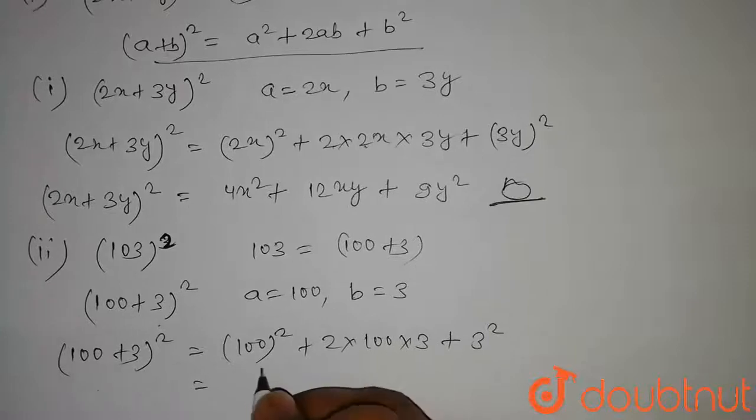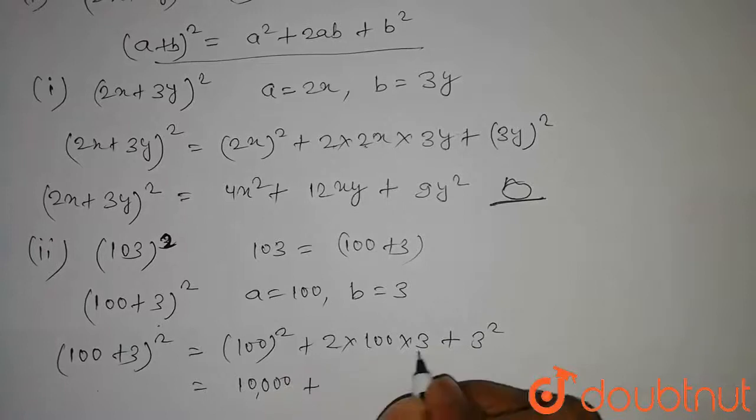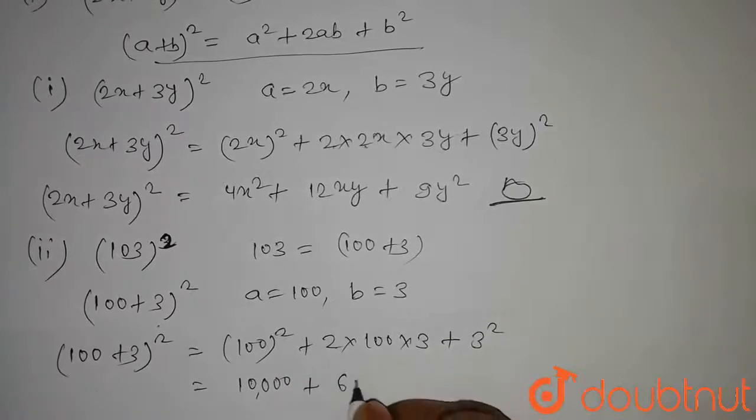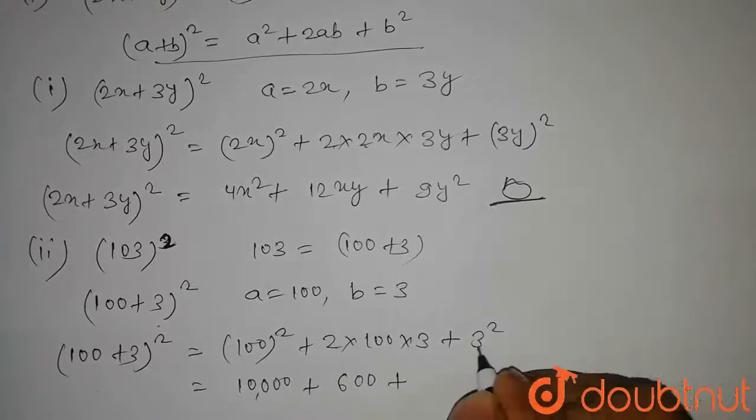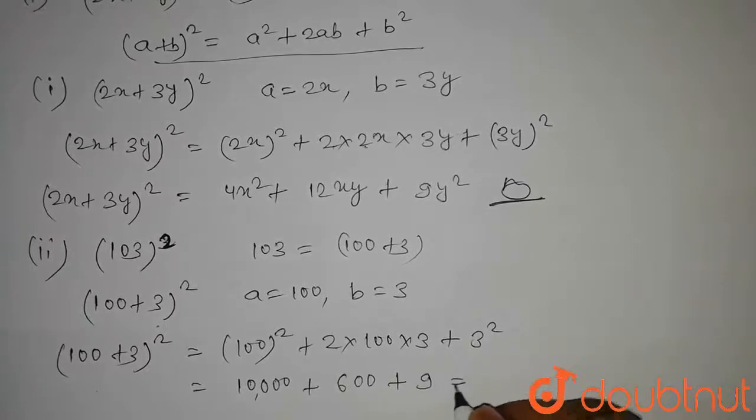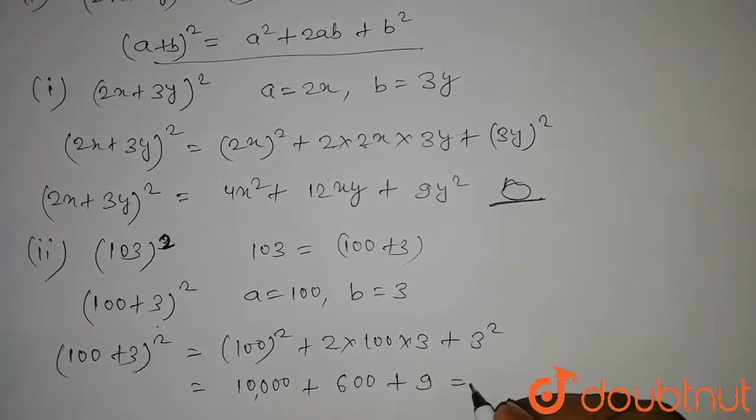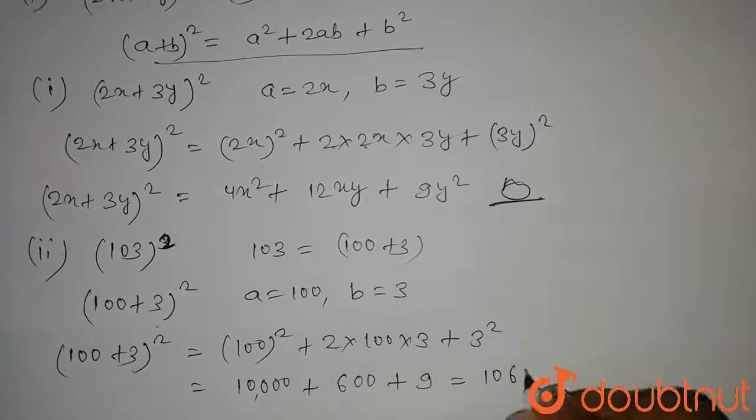We get 100² will be 10,000 plus 2 into 3 that is 6 into 100, so we get 600 plus 3² will be 9. And on solving this, we get 10,609.